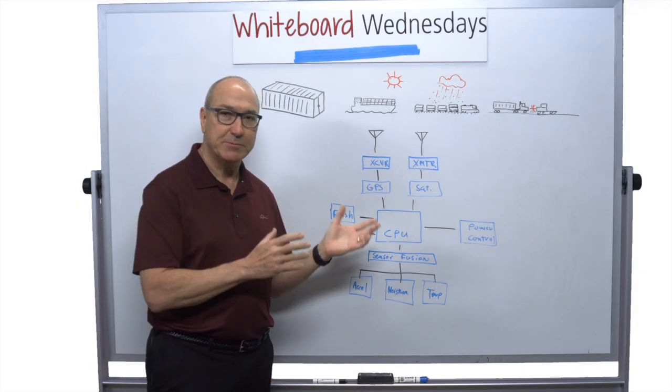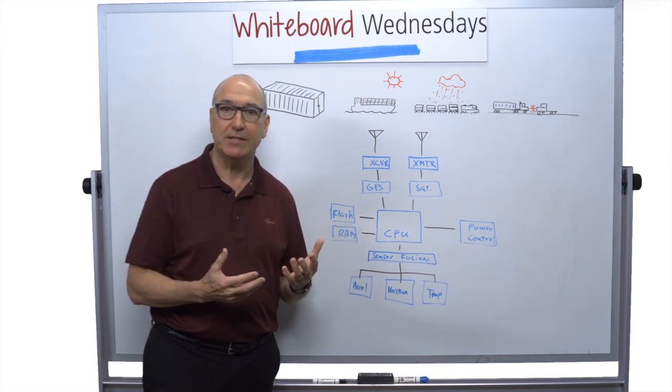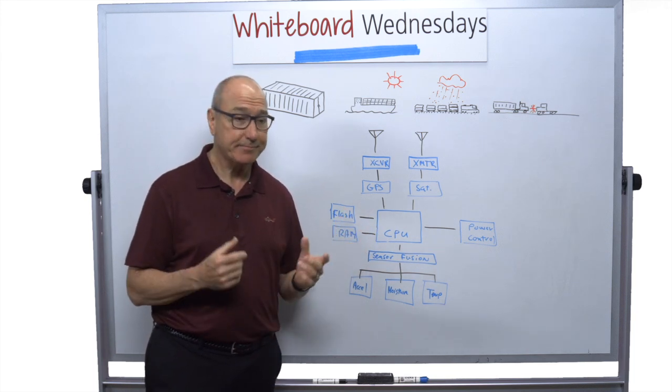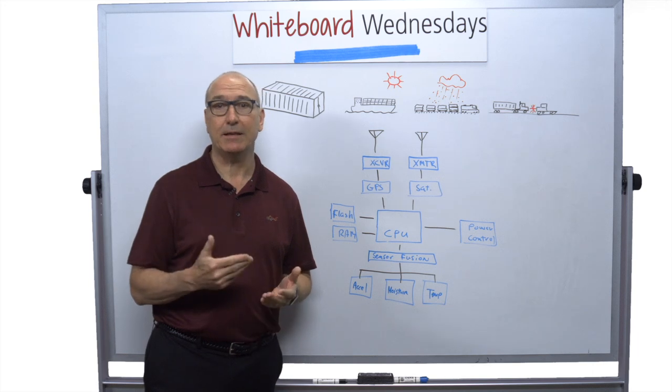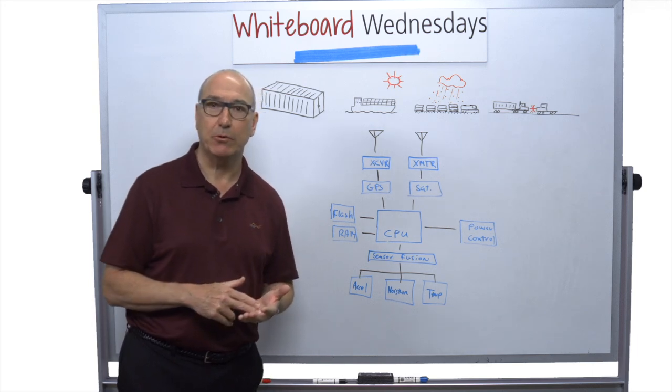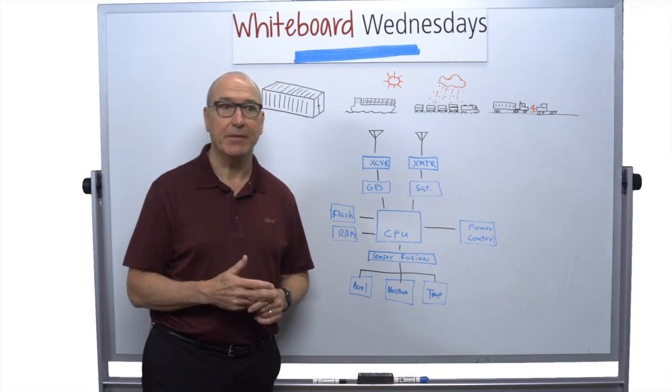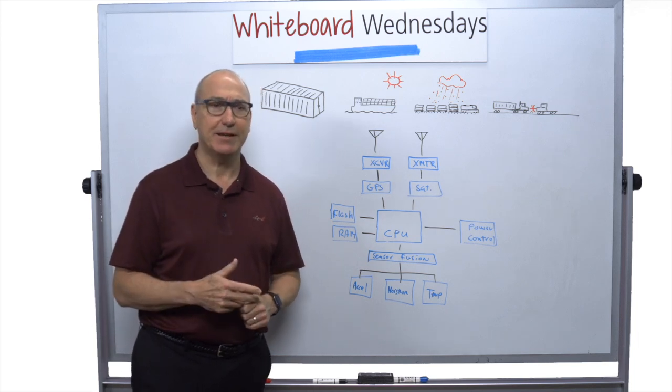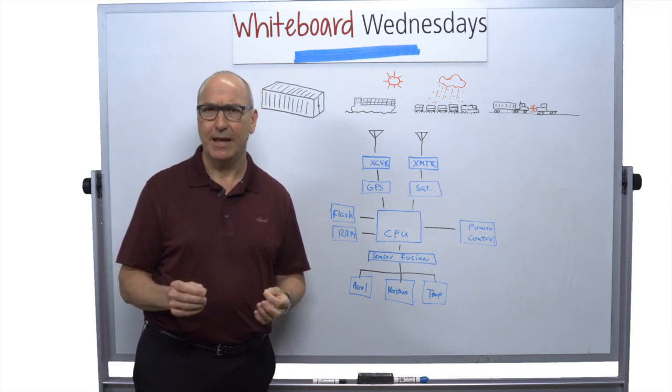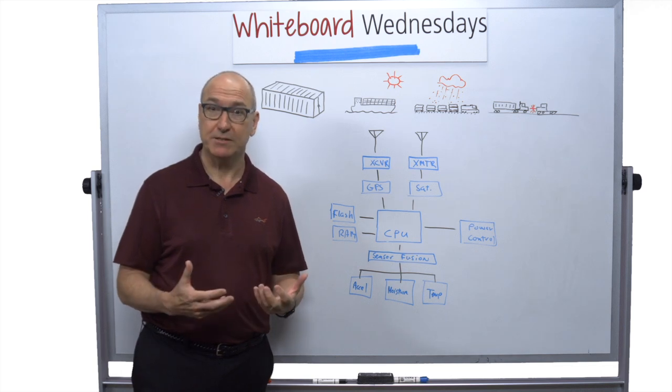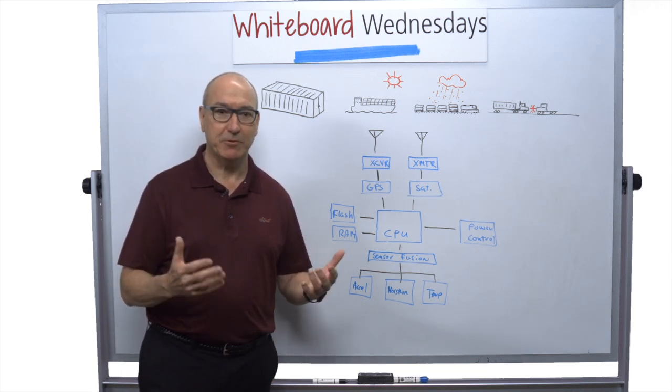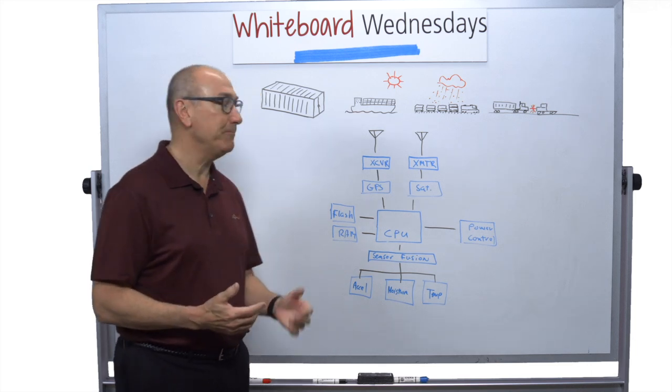And the transportation companies track all of those today with RFID tags. Just a simple RFID that lets them know when did it enter a port, when did it get loaded on a ship, when did it get loaded onto the train. And although that's good information, doesn't that seem really basic today? Basic in terms of what we would expect in this information world. We want to know everything about everything, right?